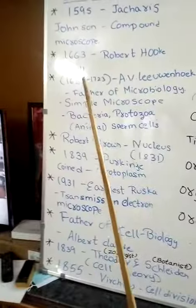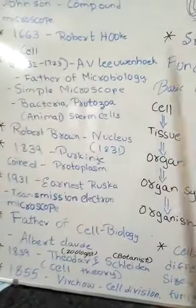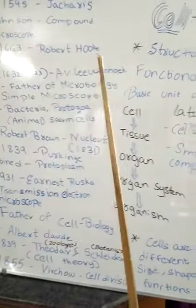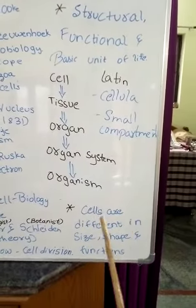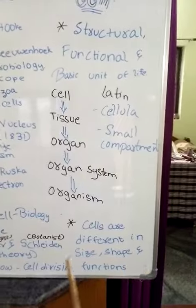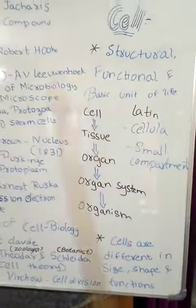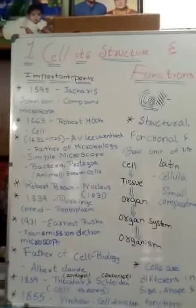The word 'cell' is derived from the Latin word 'cellula,' meaning small compartments. It was discovered by Robert Hooke in 1663 from the cork of an oak tree. Cells differ in size, shape, and function. This concludes the basic introduction of the chapter Cell: Its Structure and Functions. Thank you.